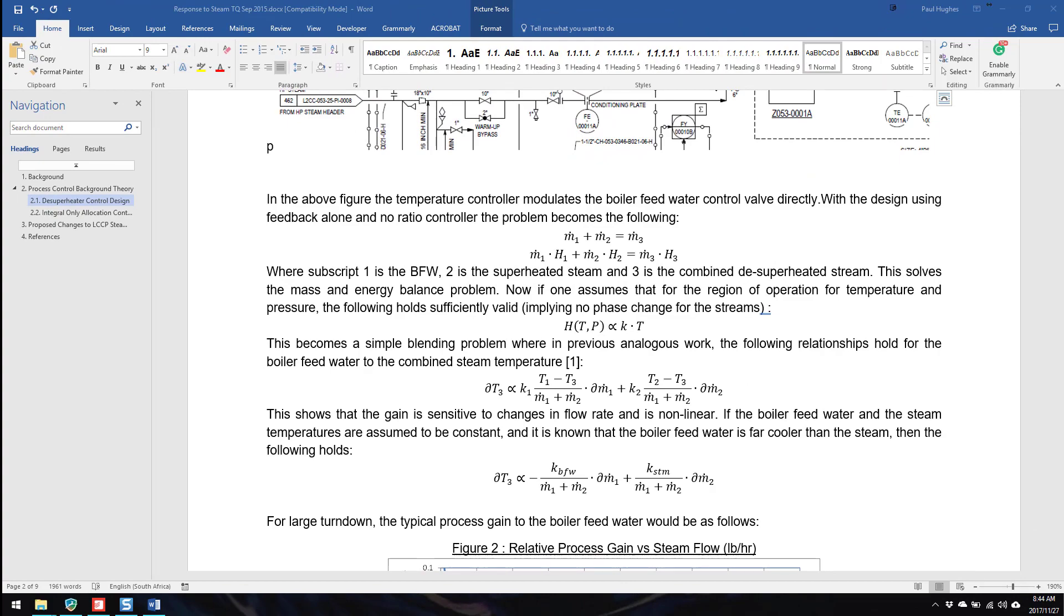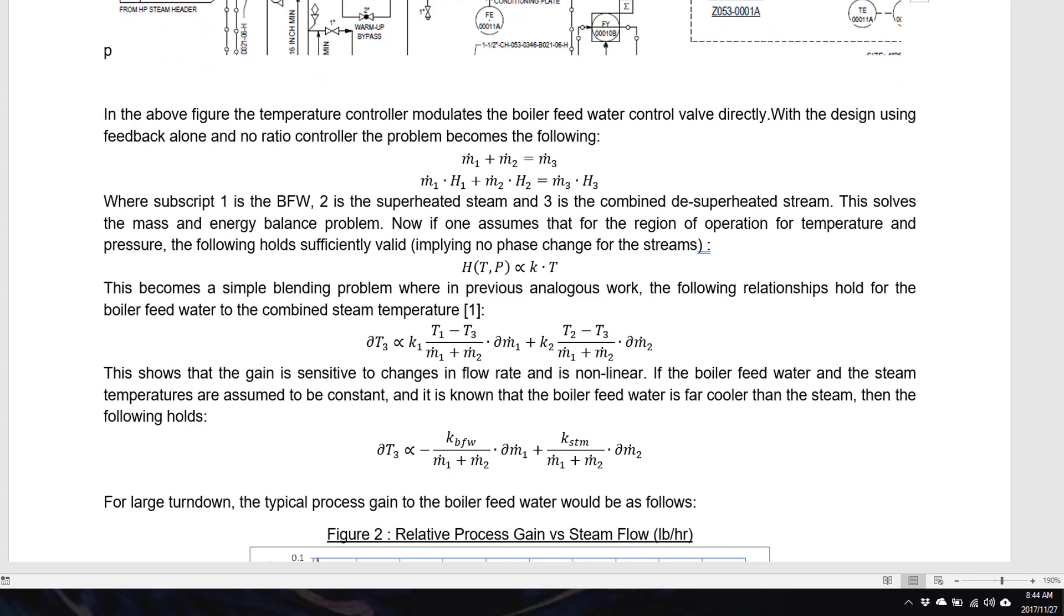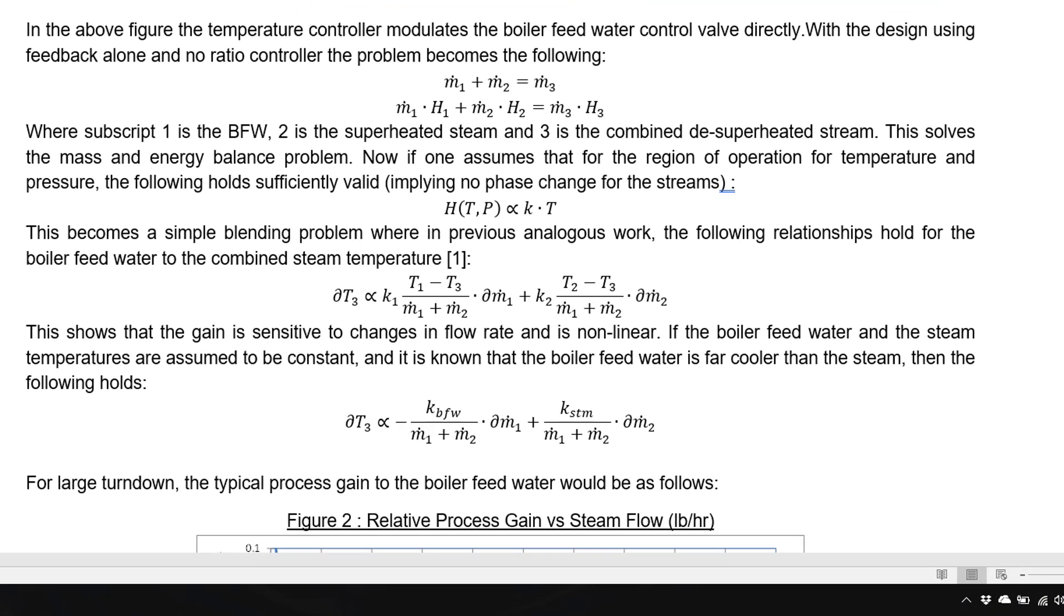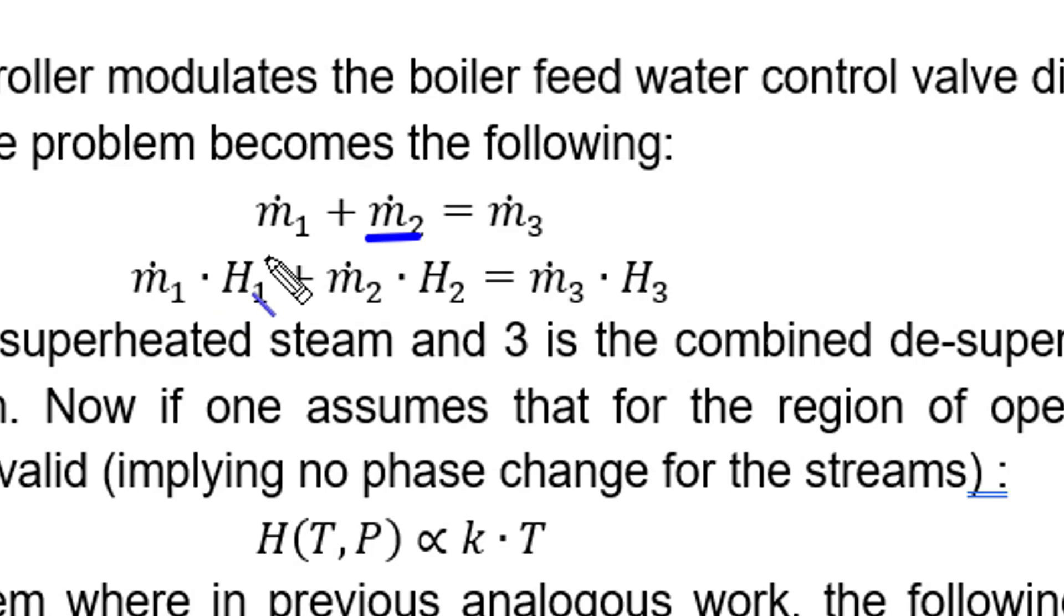Unfortunately I've got to go through a little bit of mathematics to explain the problem. We have a mass balance: m1, the boiler feed water, plus m2, the mass of steam, gives me m3, the combined mass going out. When we do an energy balance, we have m1 times H1 (enthalpy of water) plus m2 times H2 (enthalpy of steam) equals m3 times H3 (combined mass and enthalpy of the final steam quality). We're trying to control H3 because we're trying to control a certain quality—in other words, it's at a certain pressure and temperature.